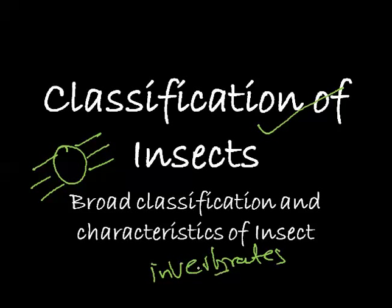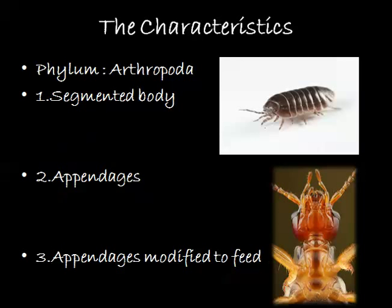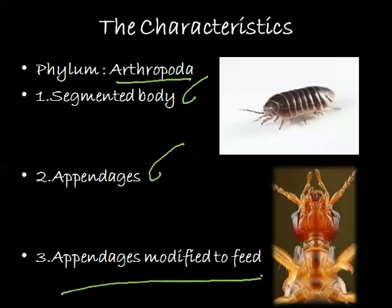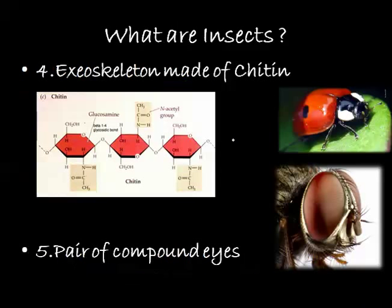We will go into more detail on the classification of insects. First, we will see the characteristics of phylum Arthropoda. The first characteristic is that the body is segmented. It has appendages, and these appendages are modified — for example, into mandibles, which help them to feed.